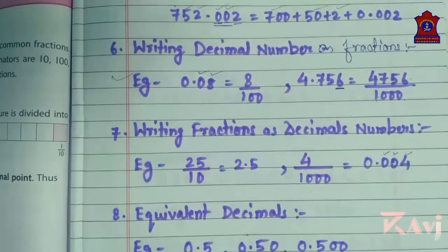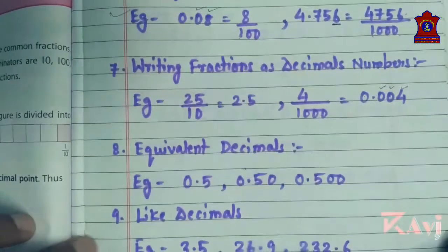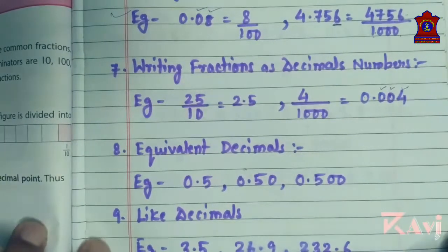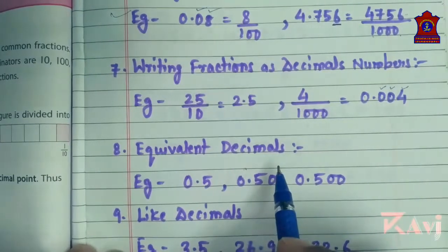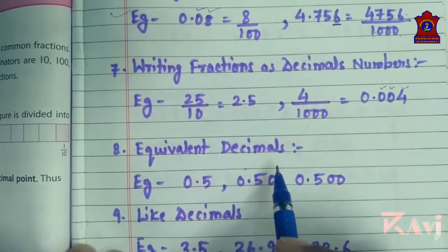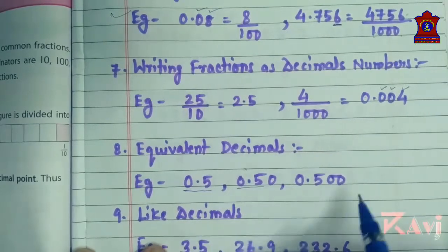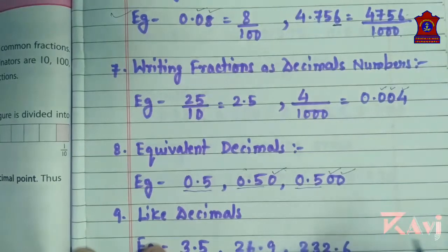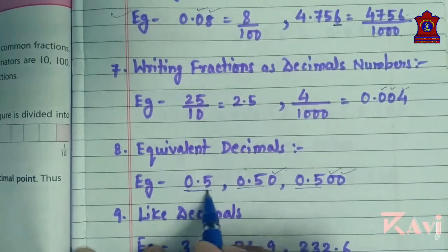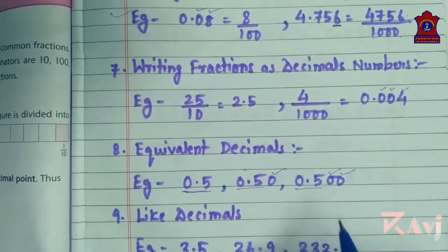Next is equivalent decimals. This is very simple. The decimals whose values do not change even after we insert 0s after the last decimal digit are called equivalent decimals. For example, 0.5, 0.50, and 0.500 all have the same value, 0.5, so these are equivalent decimals.